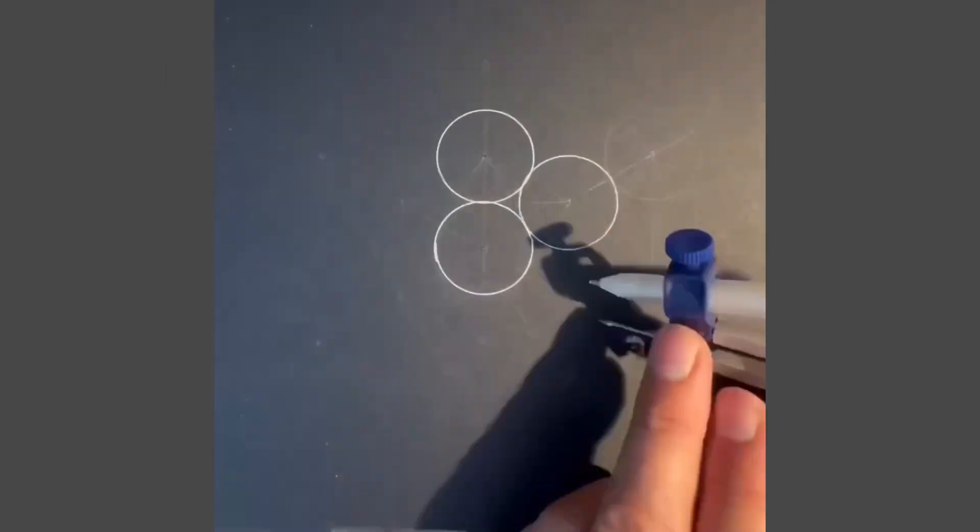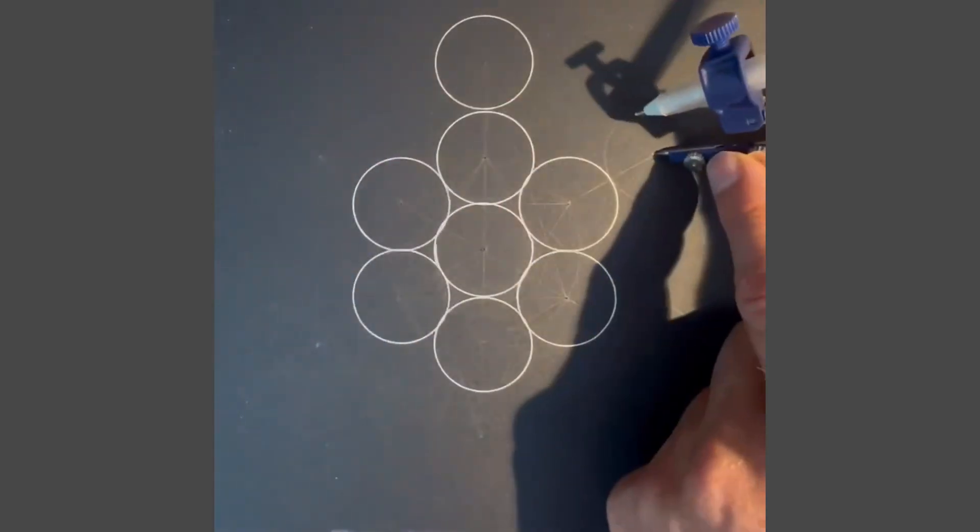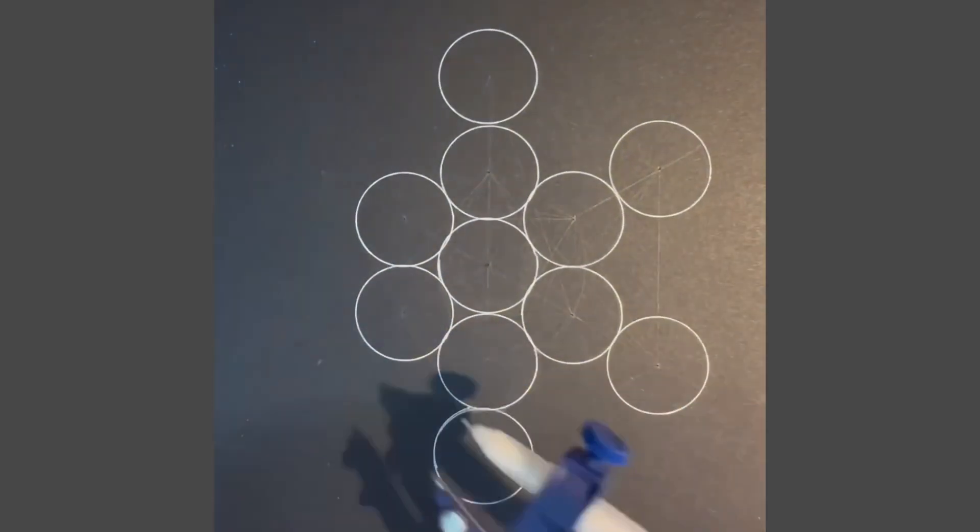How to draw a Metatron's cube? Start by drawing the fruit of life, and to do this you will need to add 13 circles in this design.